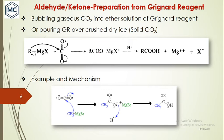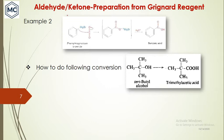The adduct is finally hydrolyzed using acid to give the carboxylic acid. For example, methyl magnesium bromide reacting with solid carbon dioxide: the nucleophilic carbon attacks CO₂, forming an adduct, which is then hydrolyzed by acid workup to give acetic acid. That is the preparation of an aliphatic carboxylic acid. An aromatic carboxylic acid can also be prepared similarly using phenyl magnesium bromide with solid carbon dioxide.